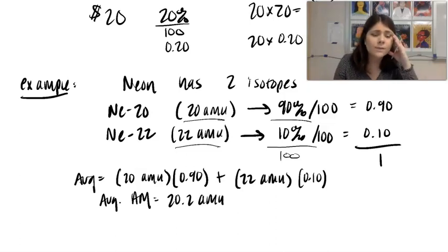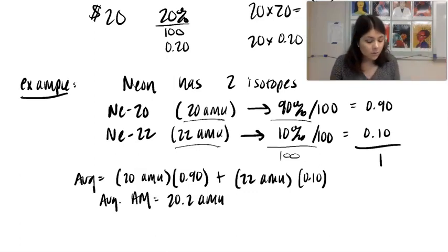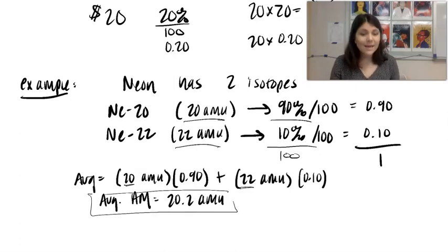And sometimes you have to think about these problems. If you're taking a weighted average, you have 20 and 22. Your answer needs to be in between 20 and 22. Let's say you end up getting 42. That does not make sense.